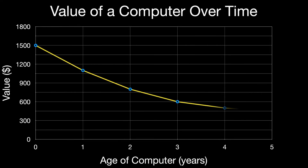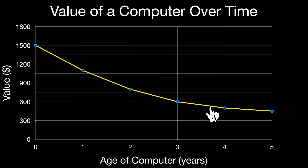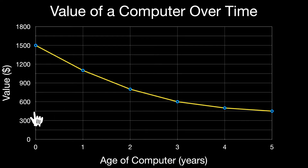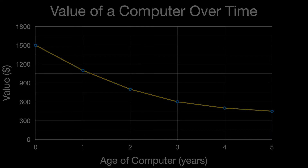There are plenty of other examples, such as the value of a computer over time. On the x-axis we have the age of the computer in years, and we can see that the value of the computer is decreasing over time. When it was brand new at zero years, the value was fifteen hundred dollars. After five years, that value is around four hundred and fifty bucks, which is between three hundred dollars and six hundred dollars. Again, a time series graph or line graph tracks how something changes over time.